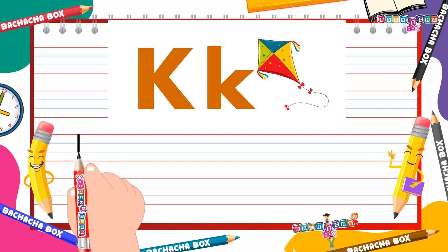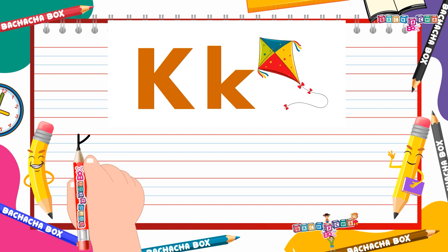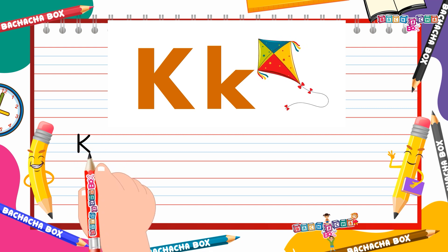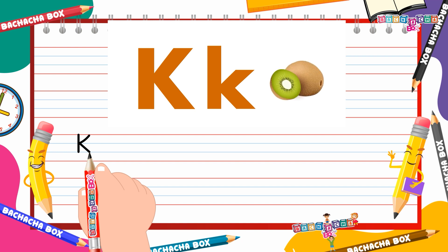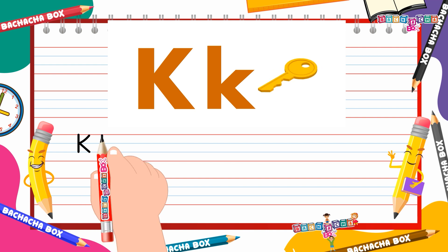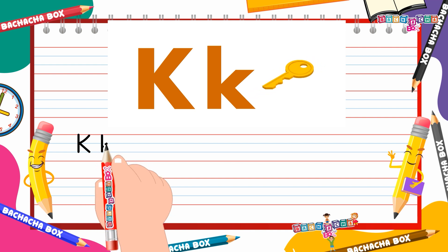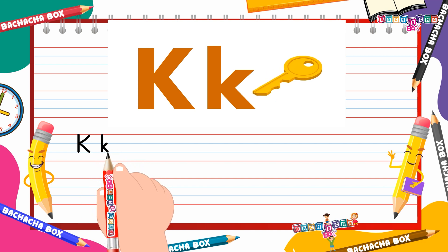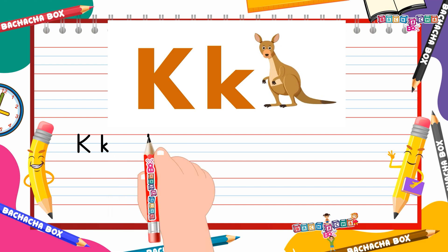Let's begin. One big standing line with two diagonal lines pointing up and down make capital K. Now smaller in proportion, one standing line with two diagonal lines pointing up and down make small k.